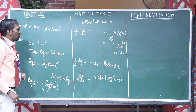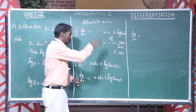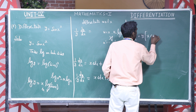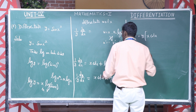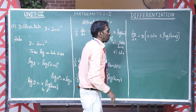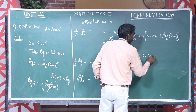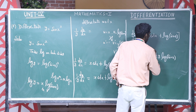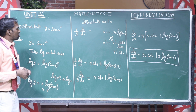We need to find dy by dx. Multiplying both sides by y, we get: dy by dx equal to y times x cot x plus y times log of sin x. So dy by dx equal to y(x cot x plus log sin x). This is the derivative of the function for this problem, solved using logarithmic differentiation. Similarly, other problems can be solved the same way.